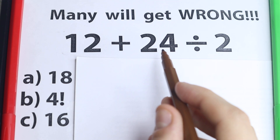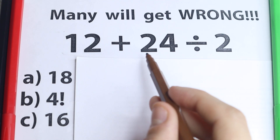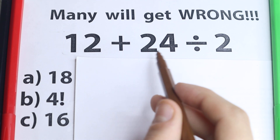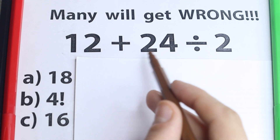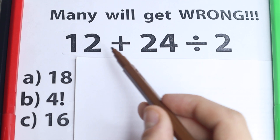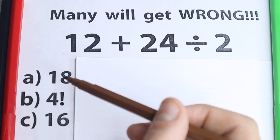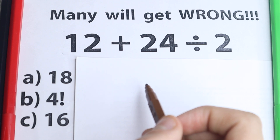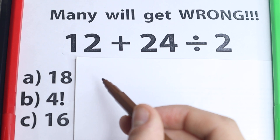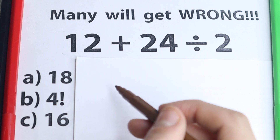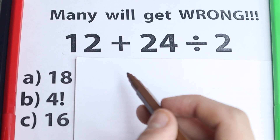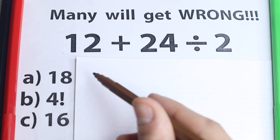We have 12 plus 24 divided by 2. On the first glance this is the most simple question you've ever seen — very simple numbers, not huge numbers. So what is the correct answer? We have three options: option A, option B, option C. I suggest you pause the video and try to solve it by yourself. It will be really interesting to check our answers and test your algebra skills.